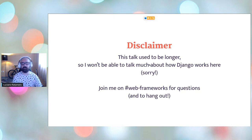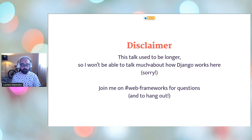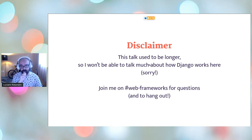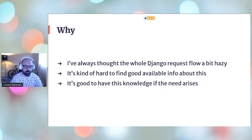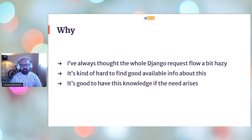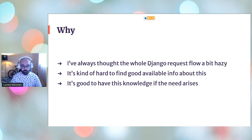First disclaimer: this talk used to be longer, about 40 to 45 minutes, so I won't be able to talk much about Django itself. I'm going to focus on the parts of the request cycle where you can do stuff. If you have questions or just want to hang out, I'm on the Web Frameworks channel on Discord. For most of the time I worked with Django, I never knew that much about how it processes a request or returns a response — it's always a bit hazy and hard to find good available information.